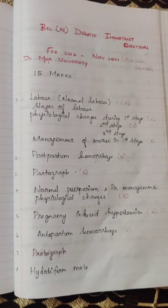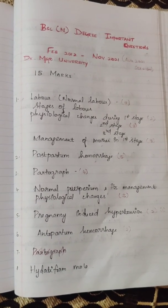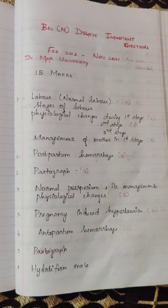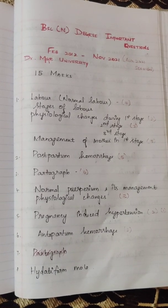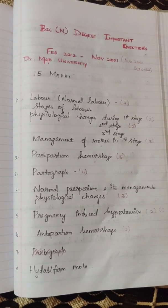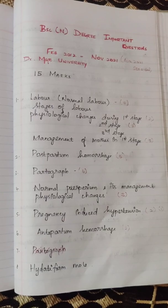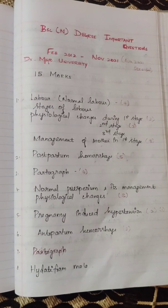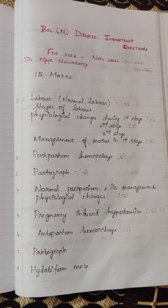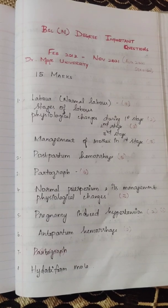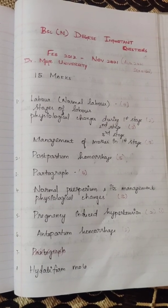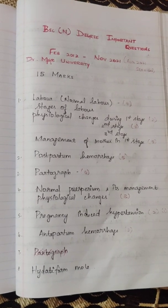The first question is labor — normal labor definition, stages of labor, physiological changes during the first stage, second stage, third stage, and management of mother in the first stage. Normal labor, under the definition, has appeared 2 to 4 times in the question paper.